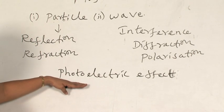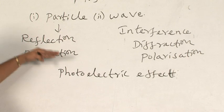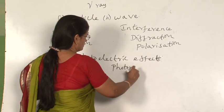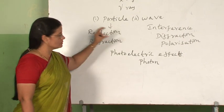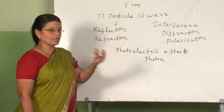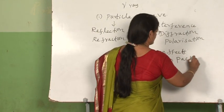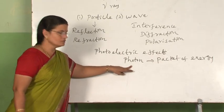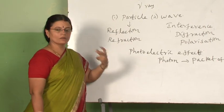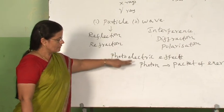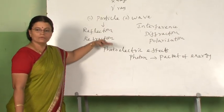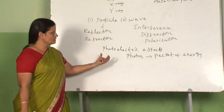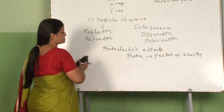Then Planck gave the quantum theory. According to quantum theory, radiation was emitted in the form of packets of energy called photons. This photon is considered to be like a particle — a packet of energy. Photoelectric effect could be explained successfully only by quantum theory, that is, emission of radiation in the form of packets of energy called photons. Now we will see some characteristic features of photons.